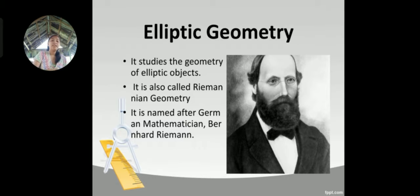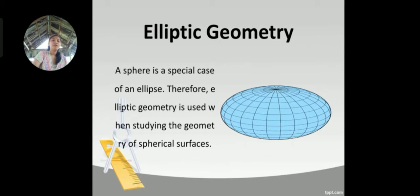Elliptic geometry studies the geometry of elliptic objects. It is also called Riemannian geometry, named after German mathematician Bernard Riemann. A sphere is a special case of an ellipse. Therefore, elliptic geometry is used when studying the geometry of spherical surfaces.